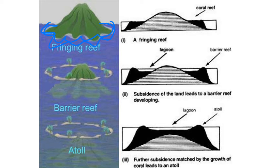A fringing reef surrounds the area near the coast. When an active volcano subsidizes over decades, it forms a barrier further from the shore, creating a lagoon in between. This is how barrier reefs are formed — subsidence of land leads to the barrier reef developing.